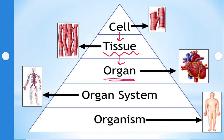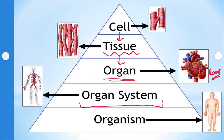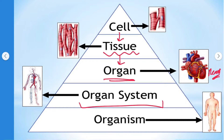For example, like the heart and many more. When many organs get together with each other, they form the organ system. For example, in the human body there are the nervous system, respiratory system, excretory system, digestive system, etc. And the organ systems group together to form the organism. This is how the organism is formed.